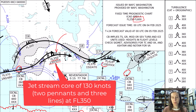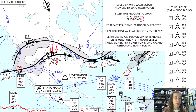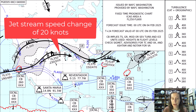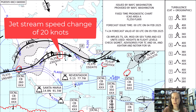Reading jet stream speed works the same as before. The pennants — each triangular flag — represent 50 knots. So two pennants give you 100 knots, and the longer tick marks are each 10 knots. So with two pennants plus additional marks you'd read 110, 120, 130 knots, and so on. You'll also see a lot of two-line dashes on the chart; these indicate a 20-knot change in jet stream speed where there isn't enough room to draw all the pennants, so they use the two-dash mark to indicate that 20-knot change.